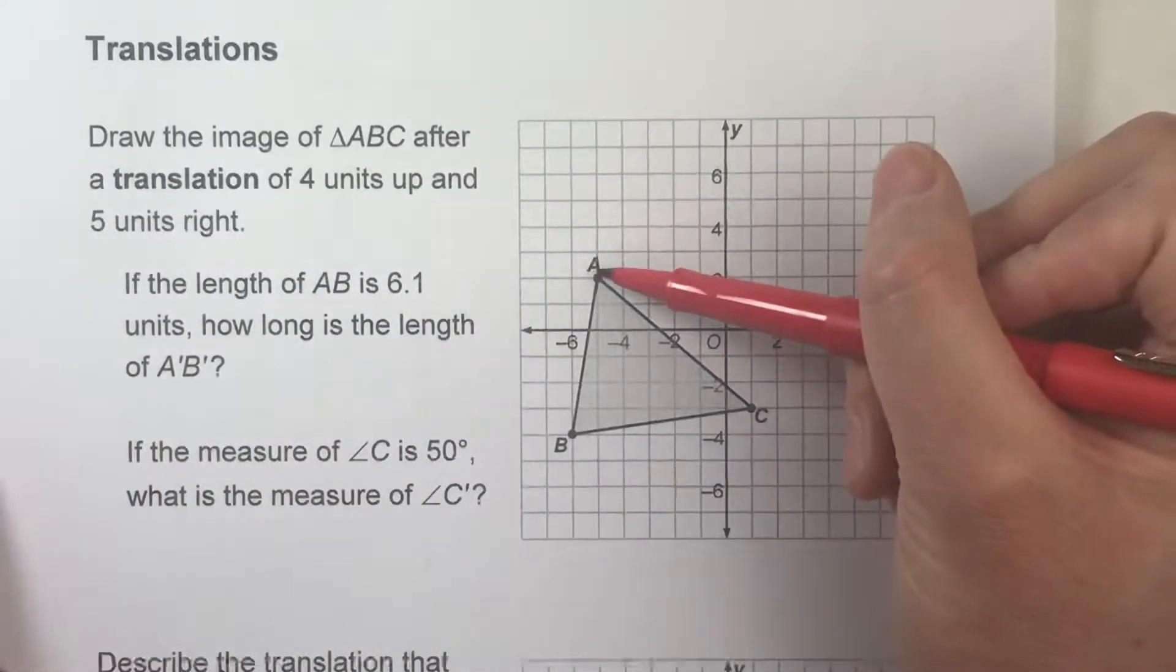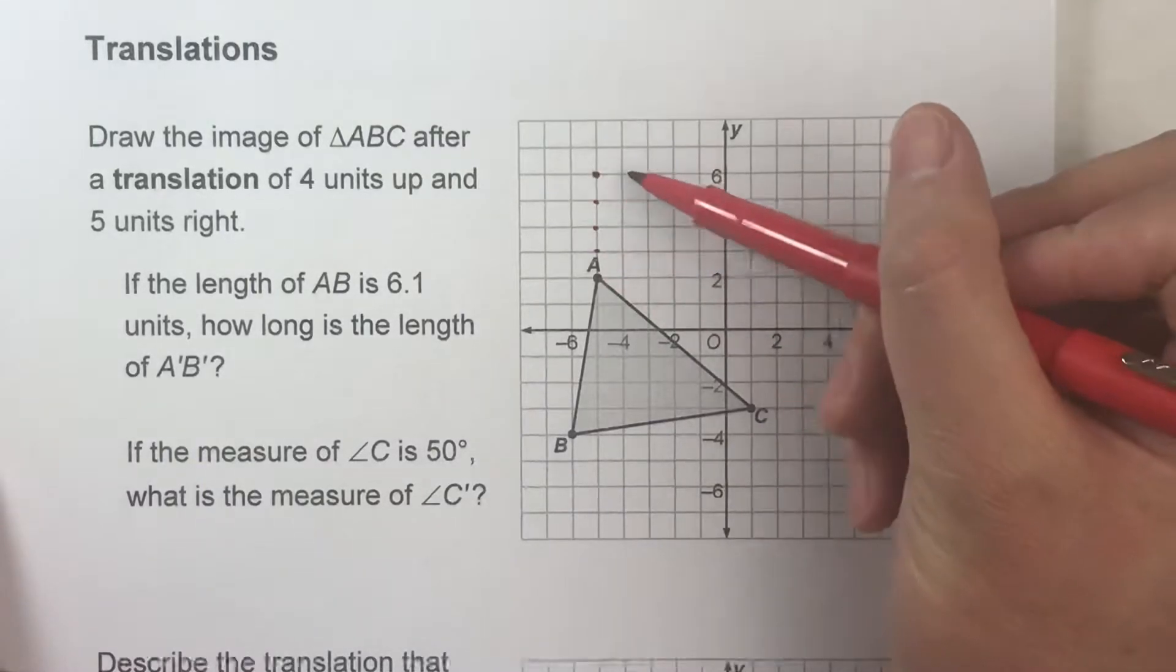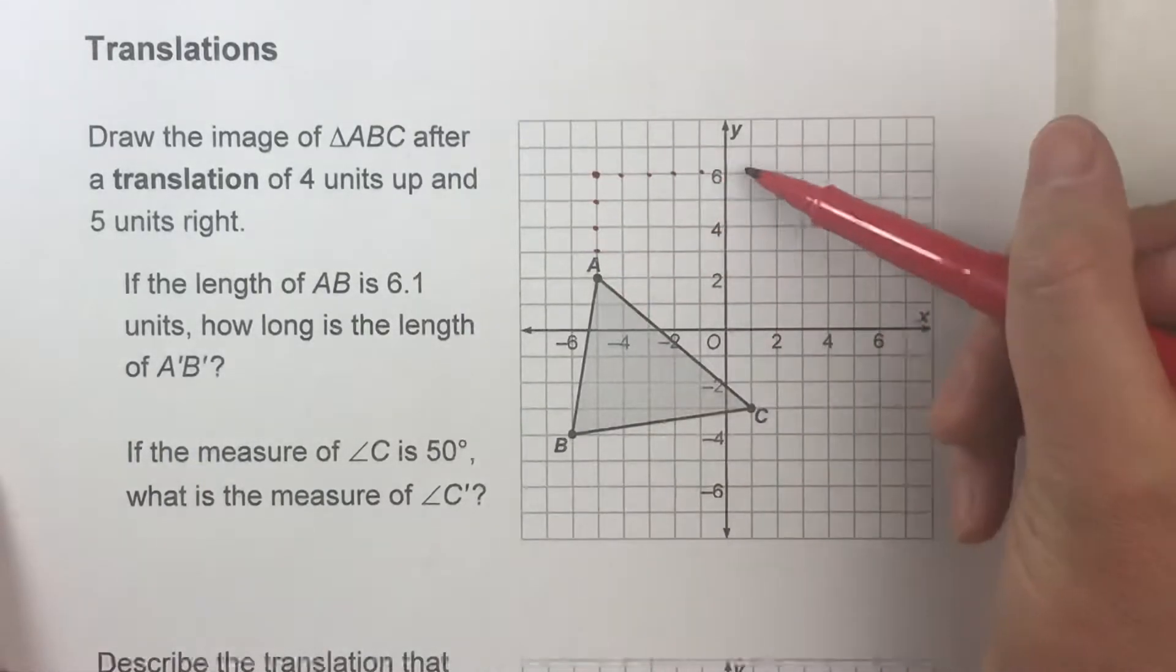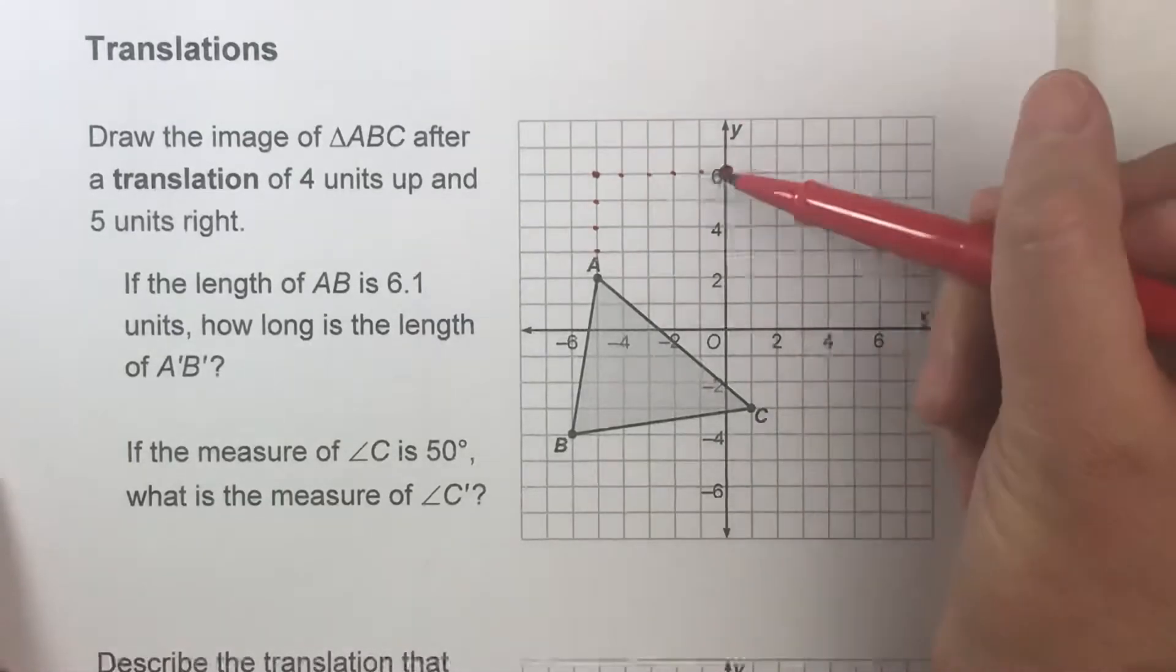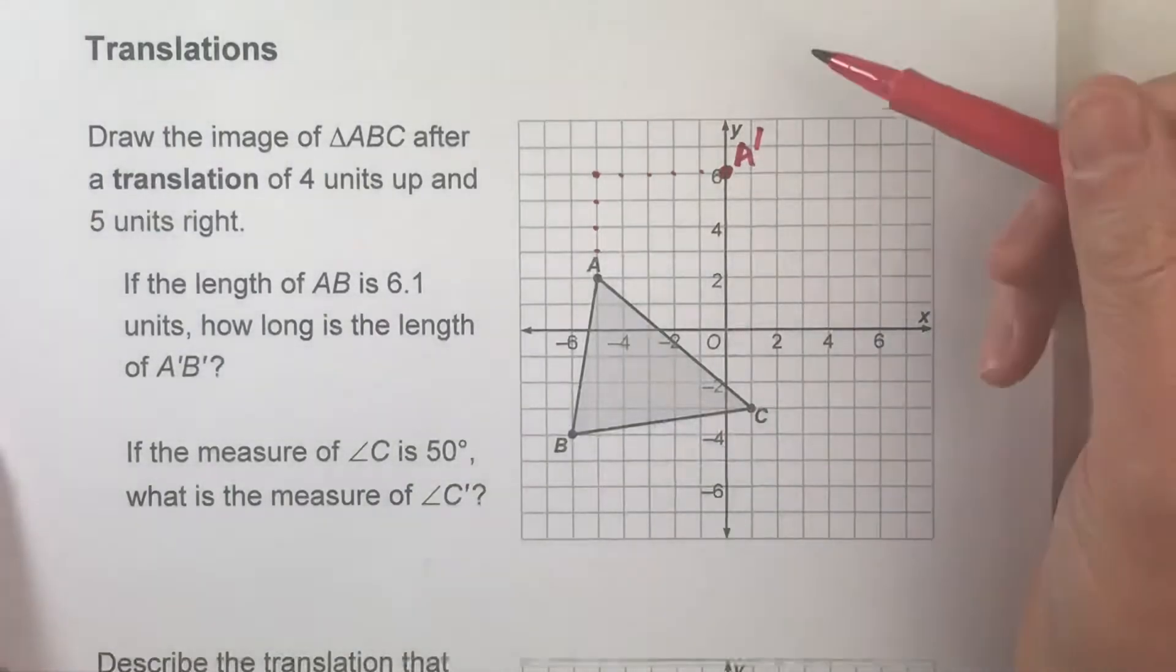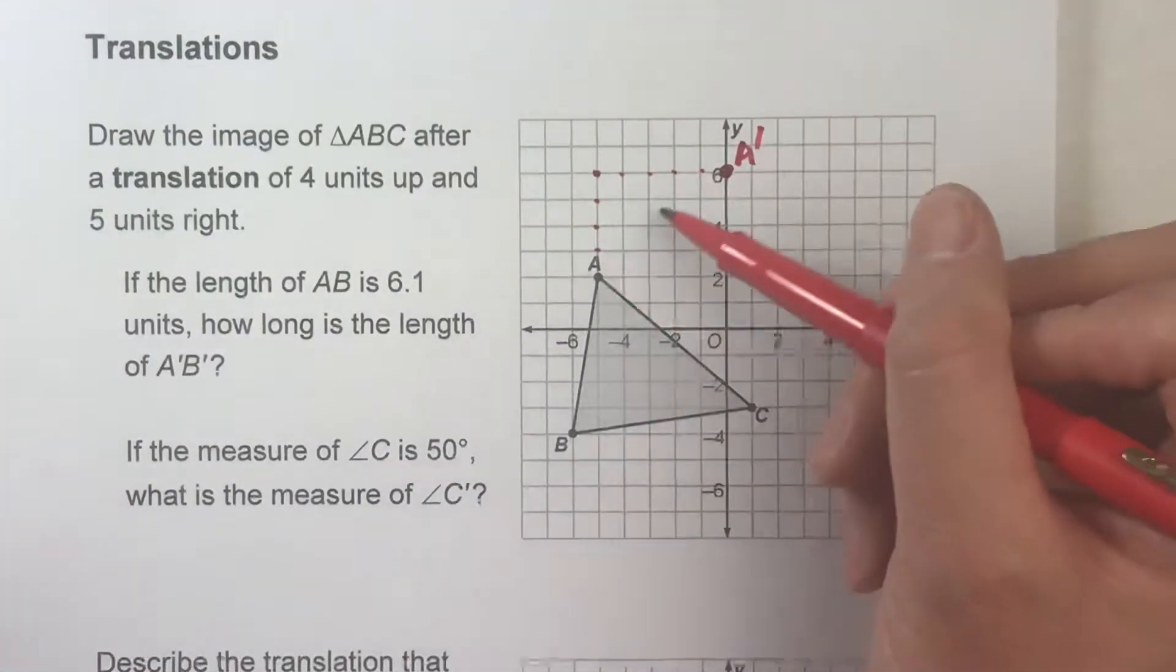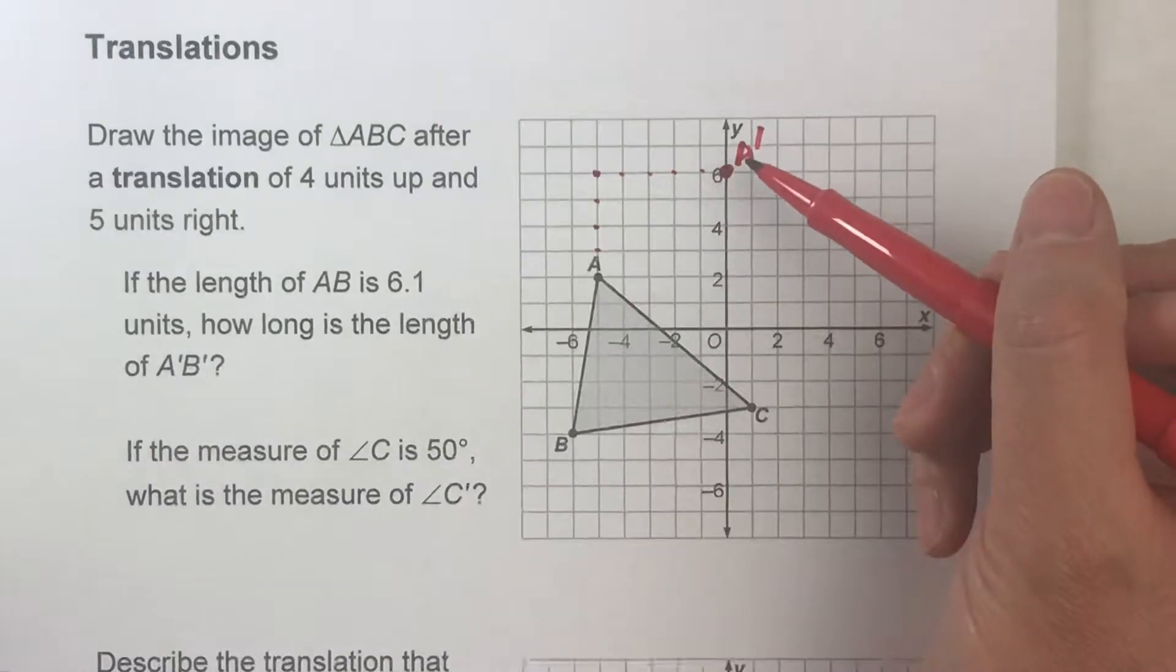So for example, triangle A, up four—one, two, three, four—five right—one, two, three, four, five. And this new point is what we call A prime. That little prime symbol represents the fact that it's not the original A, it's the new A after we've translated it.